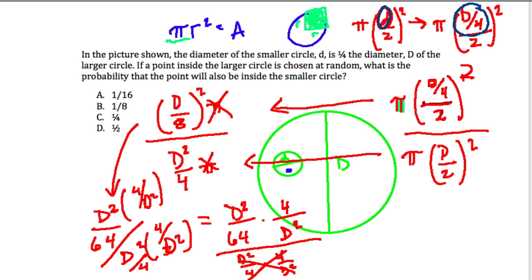Well, that's just 1. Here, the D squareds cancel out. And we're left with 4 over 64, which is 1/16th and our answer for this question.